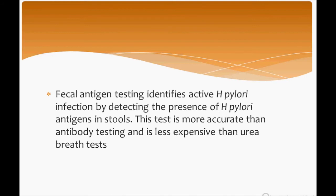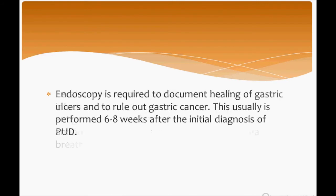Fecal antigen testing identifies active H. pylori infection by detecting the presence of H. pylori antigens in the stool. This test is more accurate than antibody testing and is less expensive than the urea breath test.